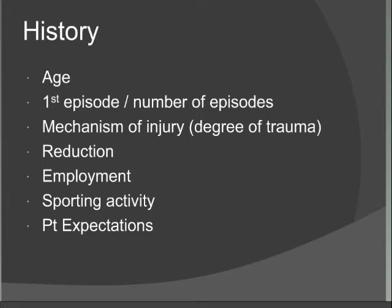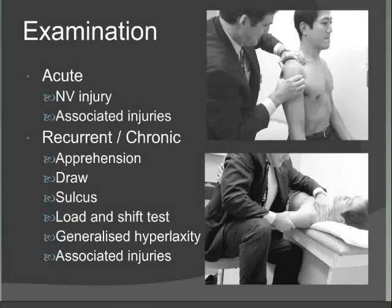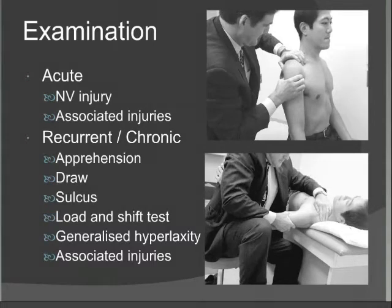Acutely you want to know if there's any neurovascular injury — specifically is there a brachial plexus injury? The most likely finding in a shoulder dislocation is an axillary nerve injury, so you'll be looking for sensation over the deltoid area laterally, and also whether the deltoid is contracting even if you can't actively range the joint. You want to look for associated injuries.